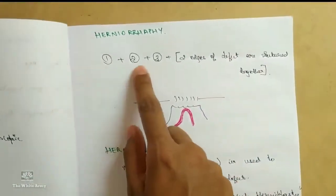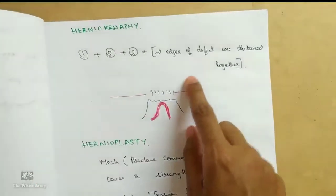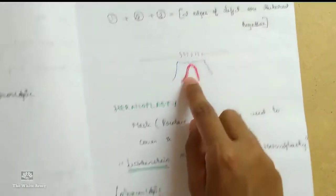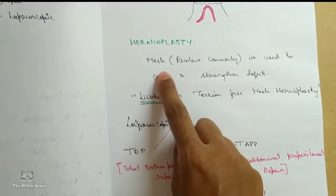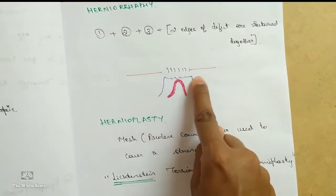Herniorrhaphy included all these steps: one, two, three, plus the two edges of the defect are sutured together. Hernioplasty is mesh. Most commonly we use prolene to cover and strengthen these defect.